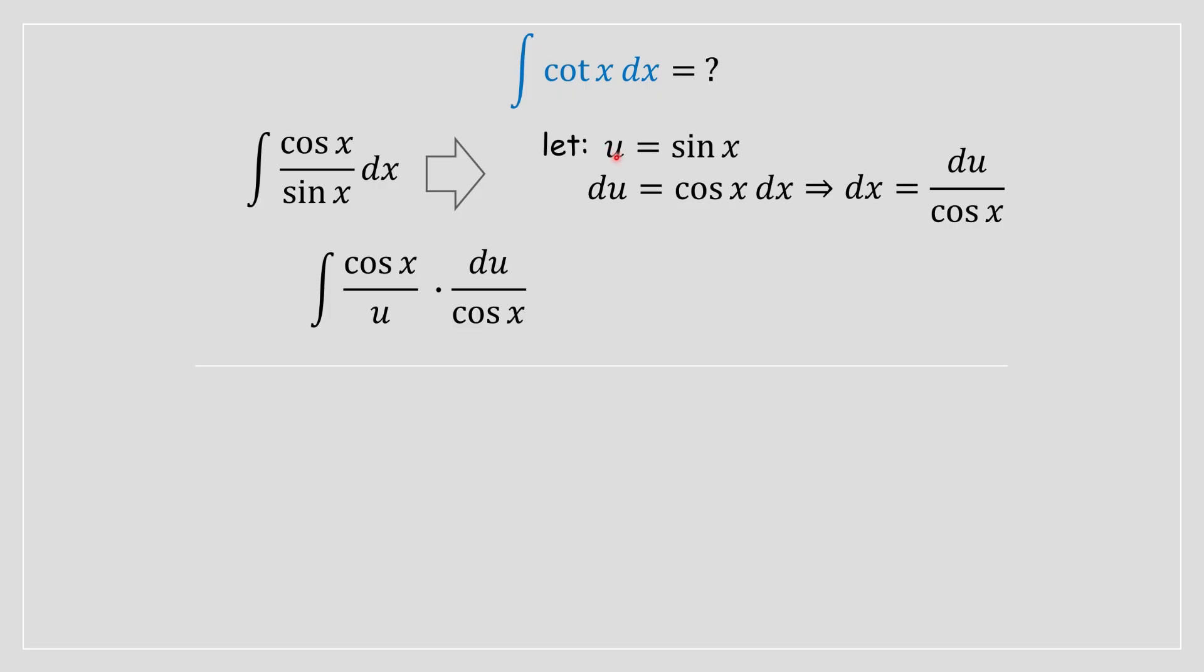Over here we are replacing sine with u. Don't forget, straight away we can simplify this integral. Cos(x) in the numerator and the denominator are going to cancel out.